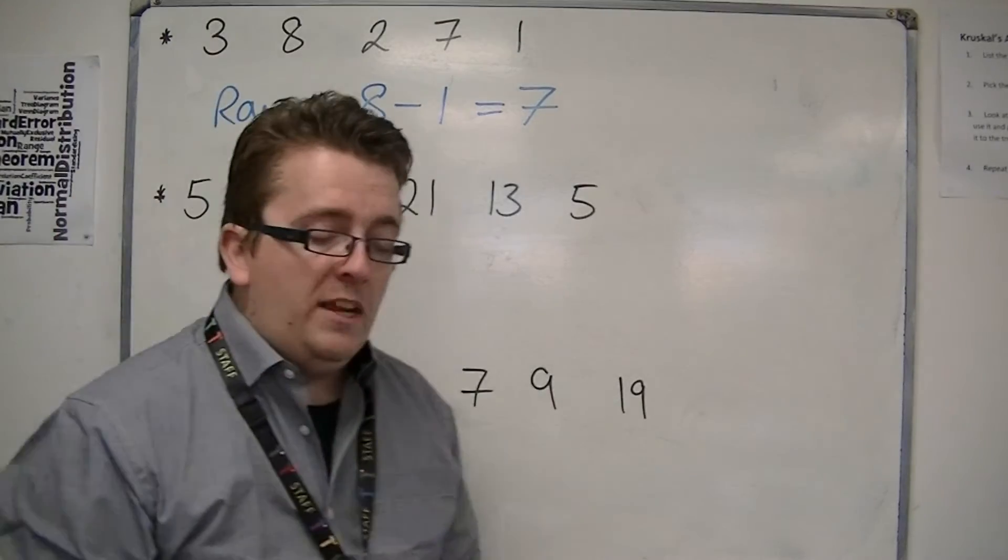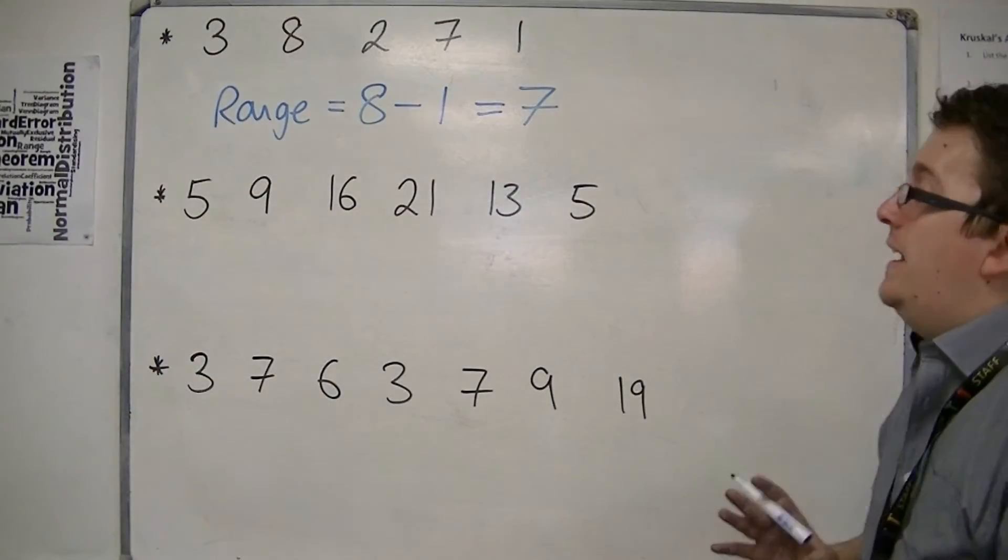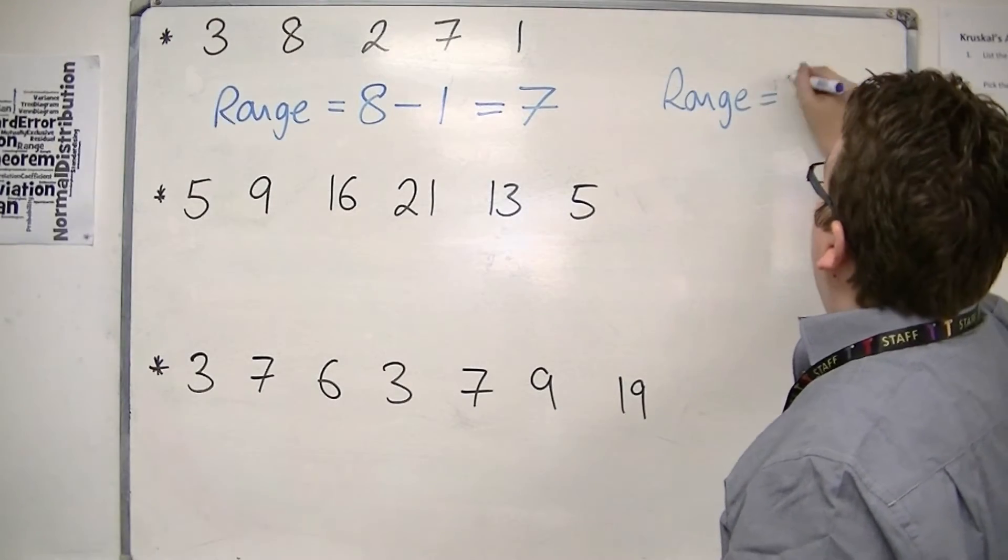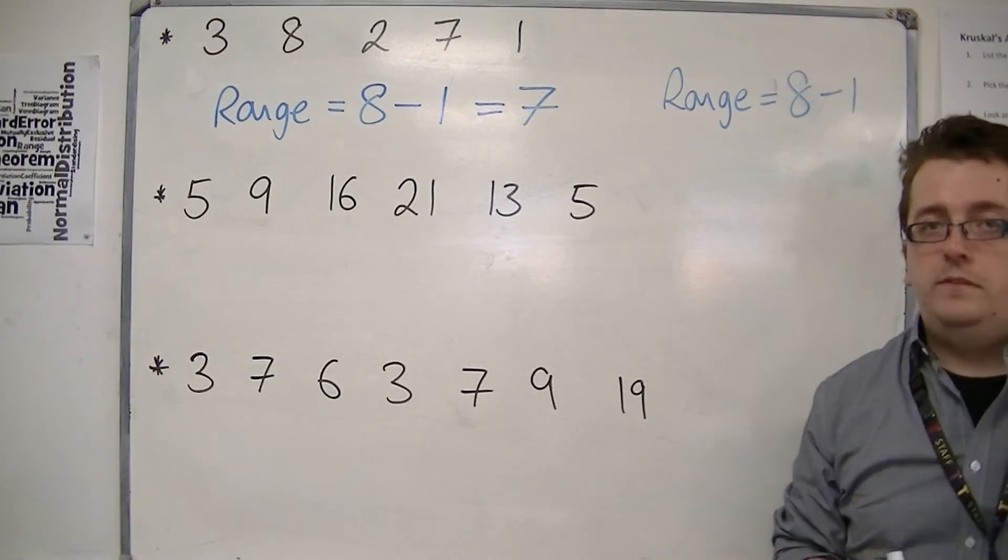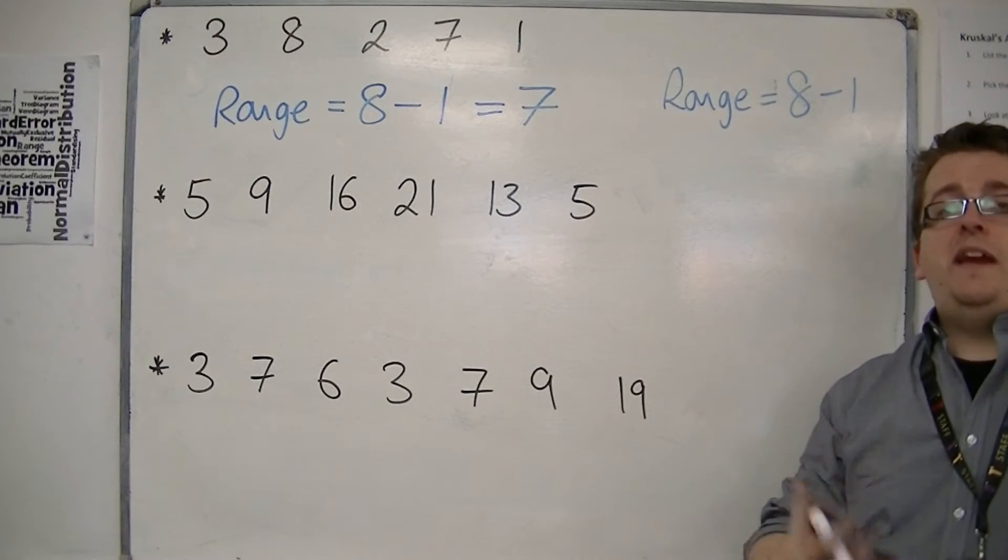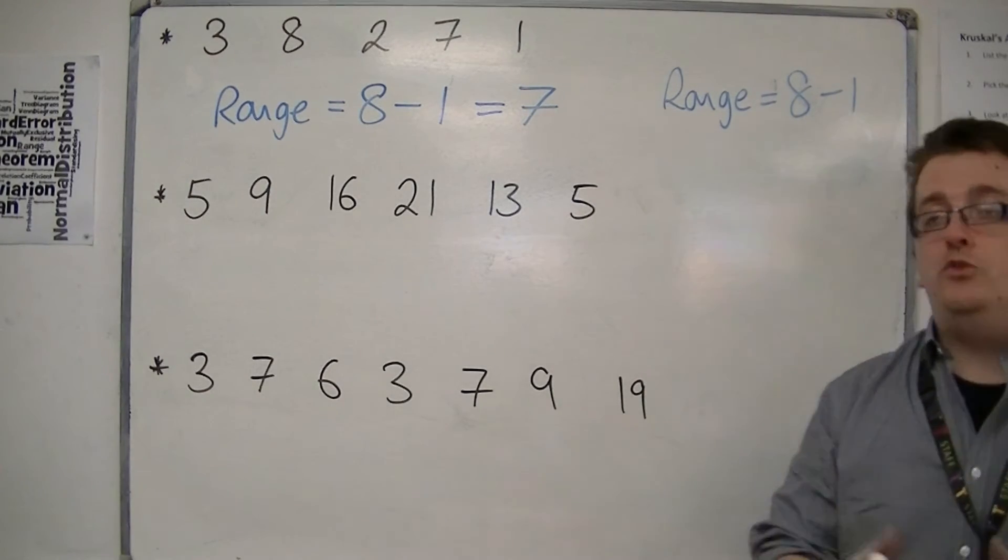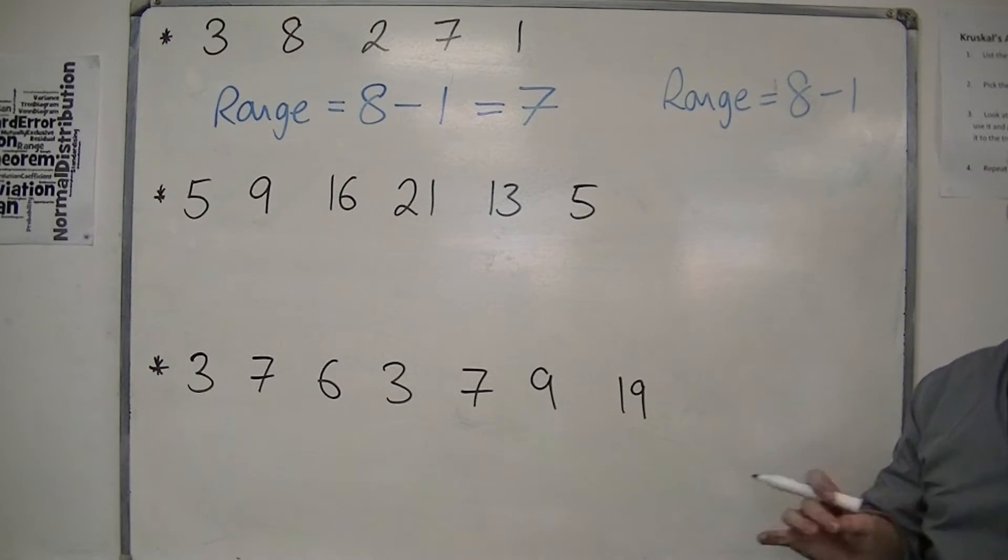Now you need to make sure that you're not making a silly error here and writing something like this. The range is that. It's not just 8 take away 1. You must put the answer down. You must do the actual subtraction. So the range is 7.